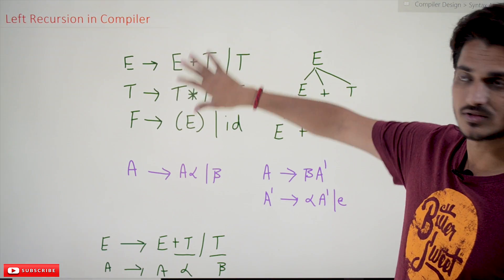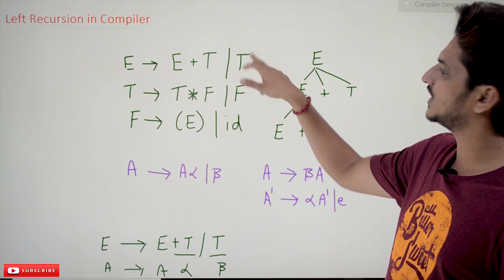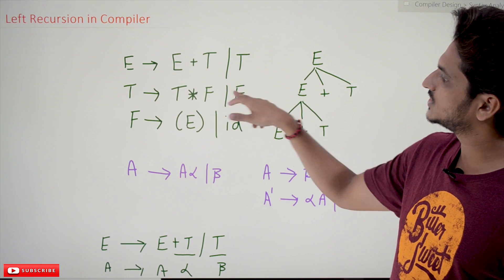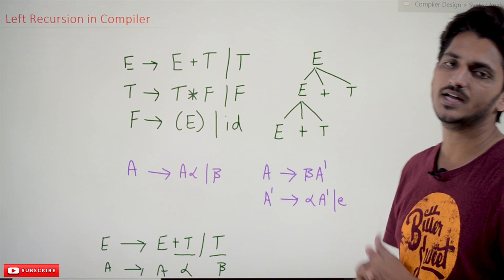Coming to today's class, this is our expression grammar that we used in our previous class: E tends to E plus T or T, T tends to T star F or F, F tends to calling the expression and id means identifier.